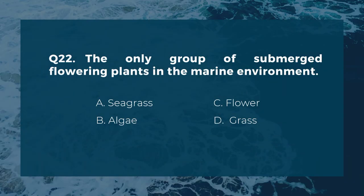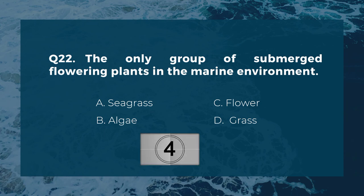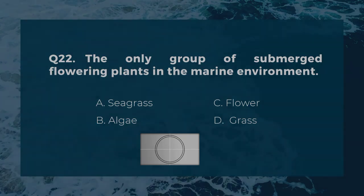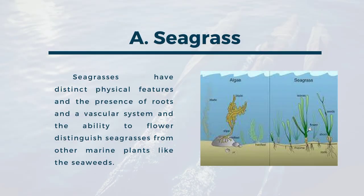Question twenty-two: the only group of submerged flowering plants in the marine environment. A) seagrass, B) algae, C) flower, D) grass. The correct answer is A, seagrass. Seagrasses have distinct physical features — the presence of roots and a vascular system, and the ability to flower — which distinguish seagrasses from other marine plants like the seaweeds.